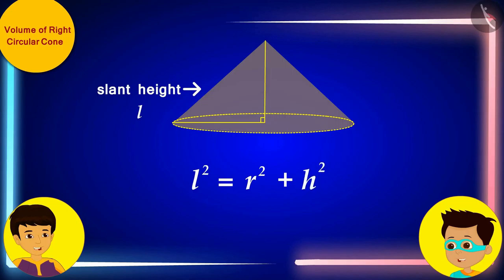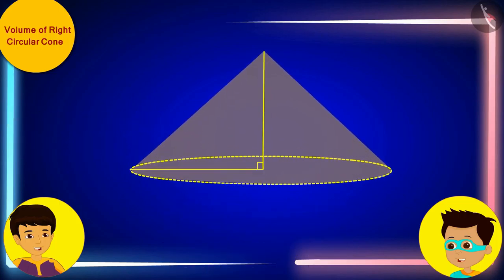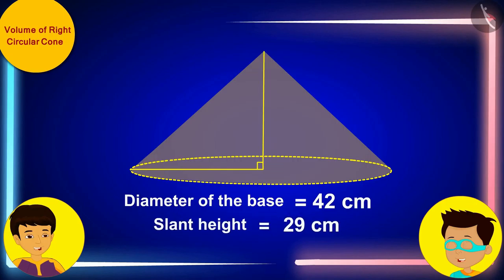Oh, yes! And we can measure the diameter of the base of this conical sand pile and also the slant height. Let me quickly measure them. The diameter of the base of this conical sand pile is 42 cm. And its slant height is 29 cm.